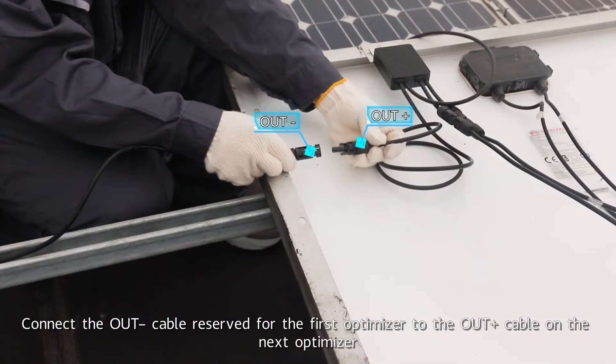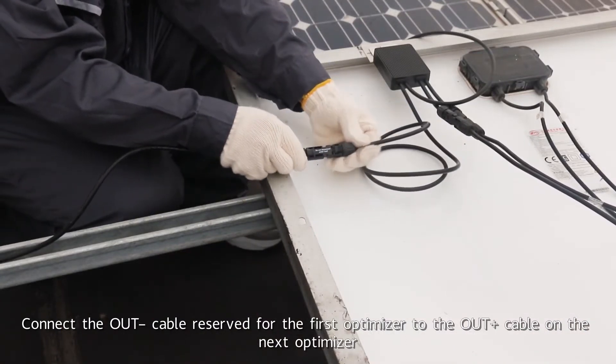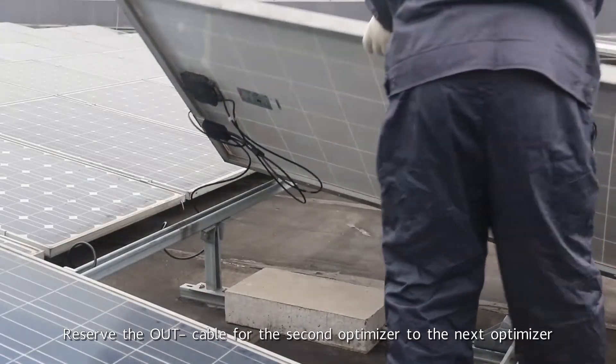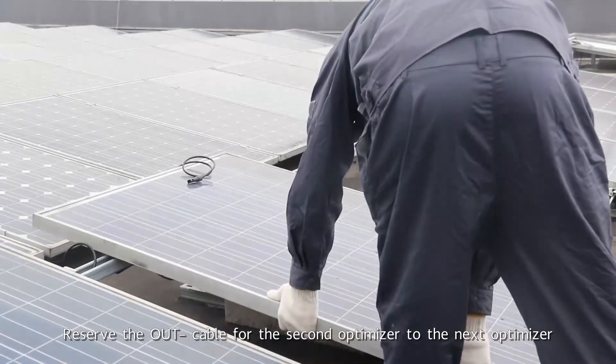Connect the out negative cable reserved for the first optimizer to the out positive cable on the next optimizer. Reserve the out negative cable for the second optimizer to the next optimizer.